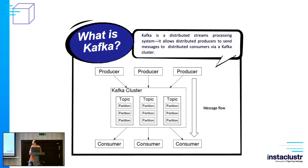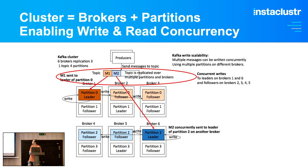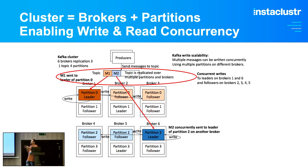Kafka is a distributed stream processing system which allows distributed producers to send messages to distributed consumers via a Kafka cluster, which is itself distributed — giving you scalability and concurrency. At a very high level, Kafka is a cluster of brokers.